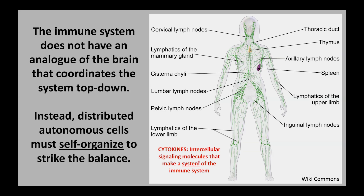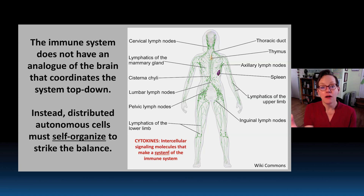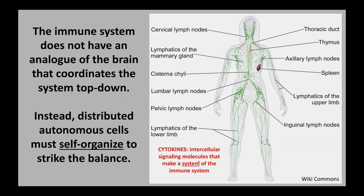Cytokines are the molecules that really make a system of our immune system. Now that we're multicellular, anatomically complex, large organisms, the cytokines help our cells to coordinate and defend the entire space. So how do we think about how natural selection might have worked on the capacity of cytokines to strike an optimal protection-pathology balance?